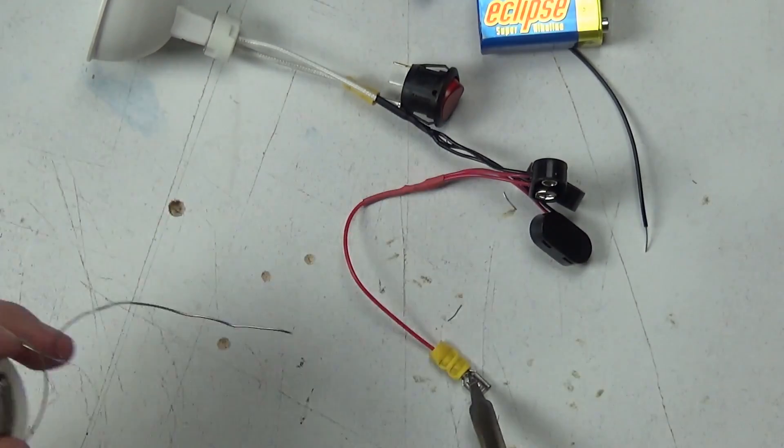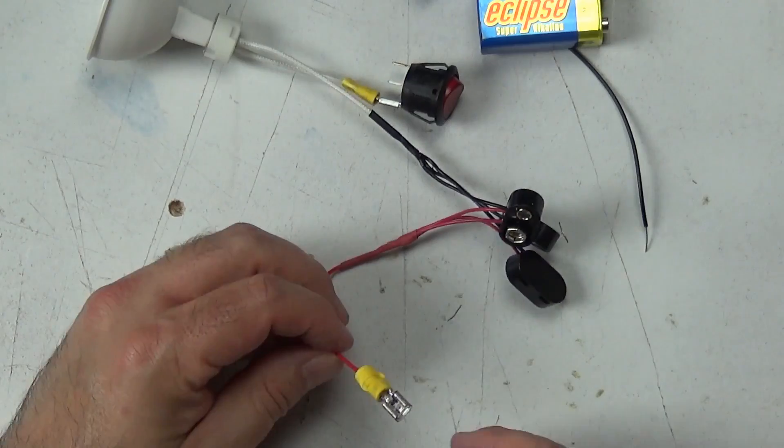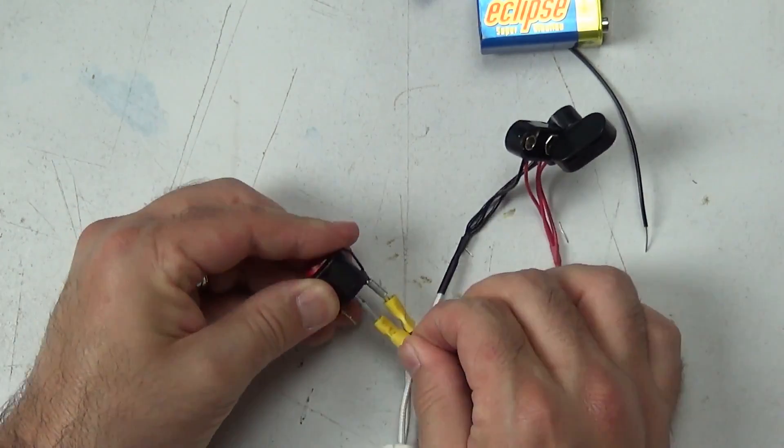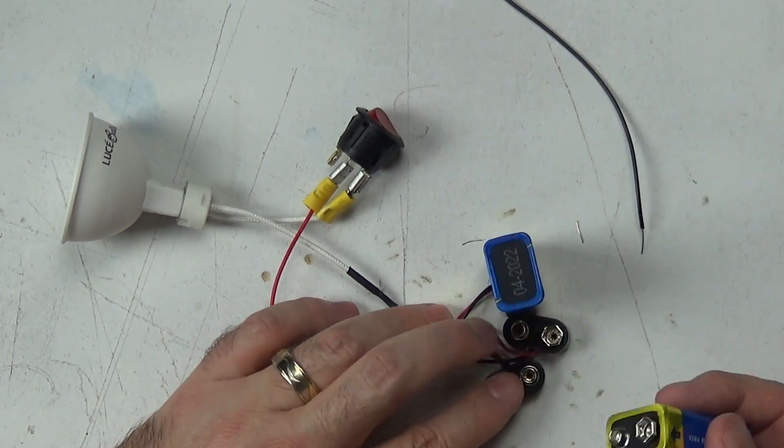Ultimately that's it. That's the entire wiring process. That is the entire configuration. Drop your little MR16 globe in your housing. I've got a lid on mine. Slide the lid closed. Connect the three 9 volt batteries. Turn the light on. You're in business.